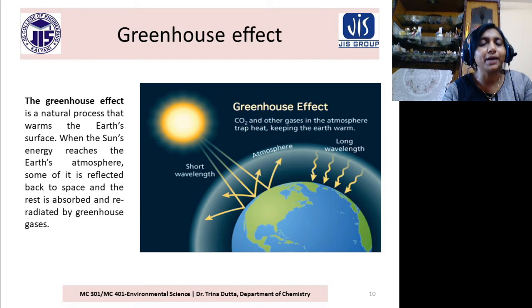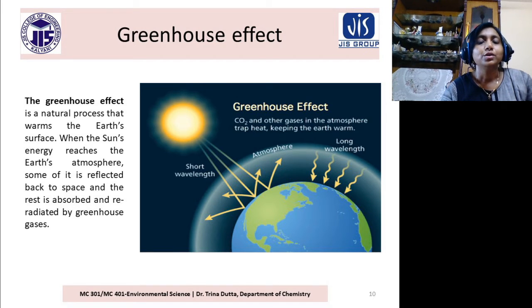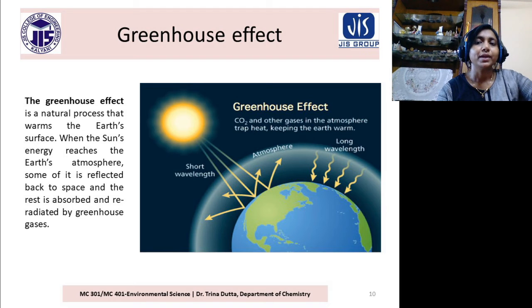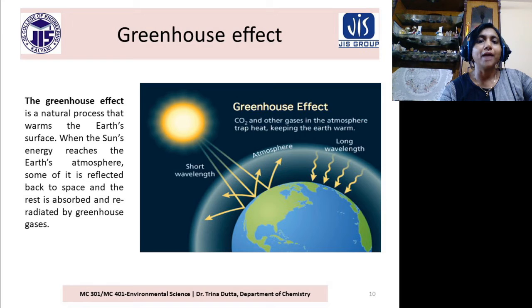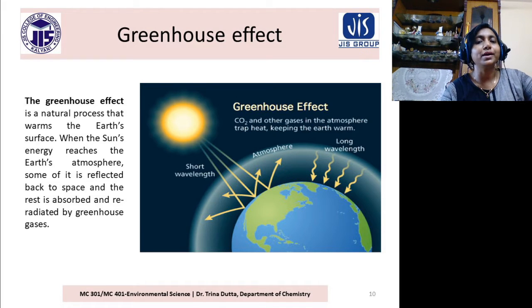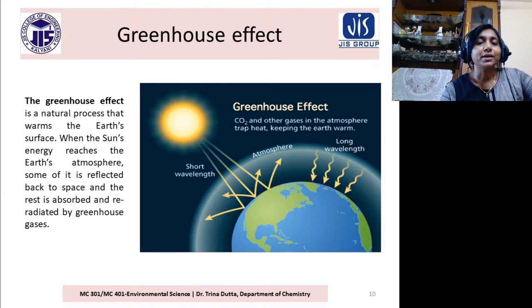The incoming solar radiation, being of shorter wavelength, can penetrate the atmosphere very easily. But at daytime, when the sunlight comes, the Earth's surface becomes hot.